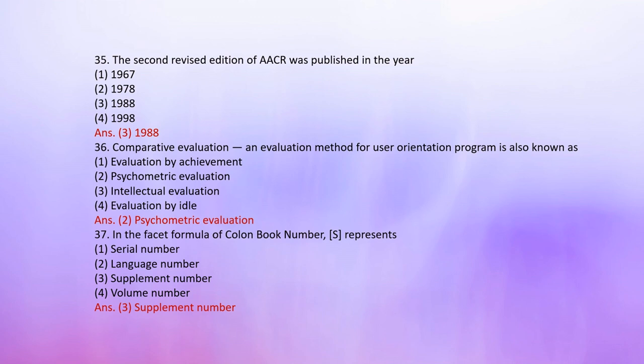Number 36: Comparative evaluation — an evaluation method for user orientation programs — is also known as: 1. Evaluation by achievement, 2. Psychometric evaluation, 3. Intellectual evaluation, 4. Evaluation by idle. The correct answer is 2: Psychometric evaluation.